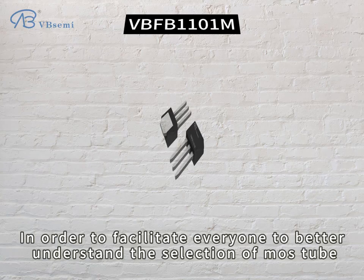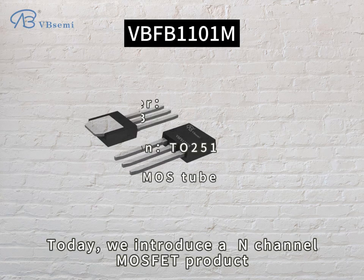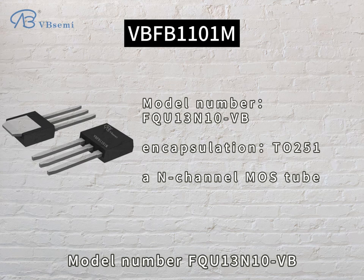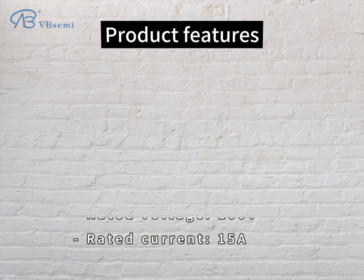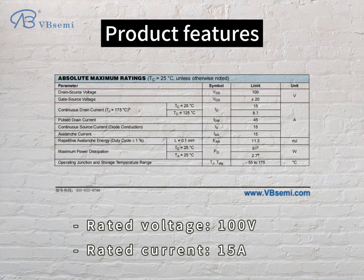In order to facilitate everyone to better understand the selection of MOS tubes, today we introduce an N-channel MOSFET product. The model number is FQU13N10VB, with a rated voltage of 100V and a rated current of 15A.